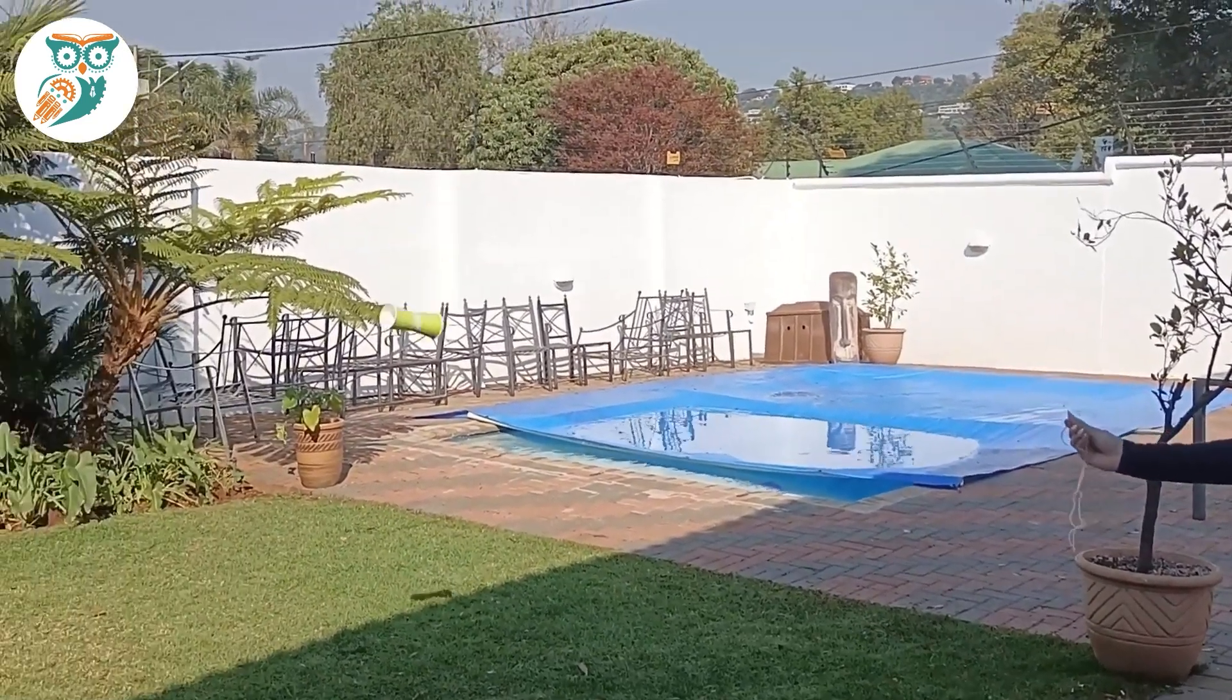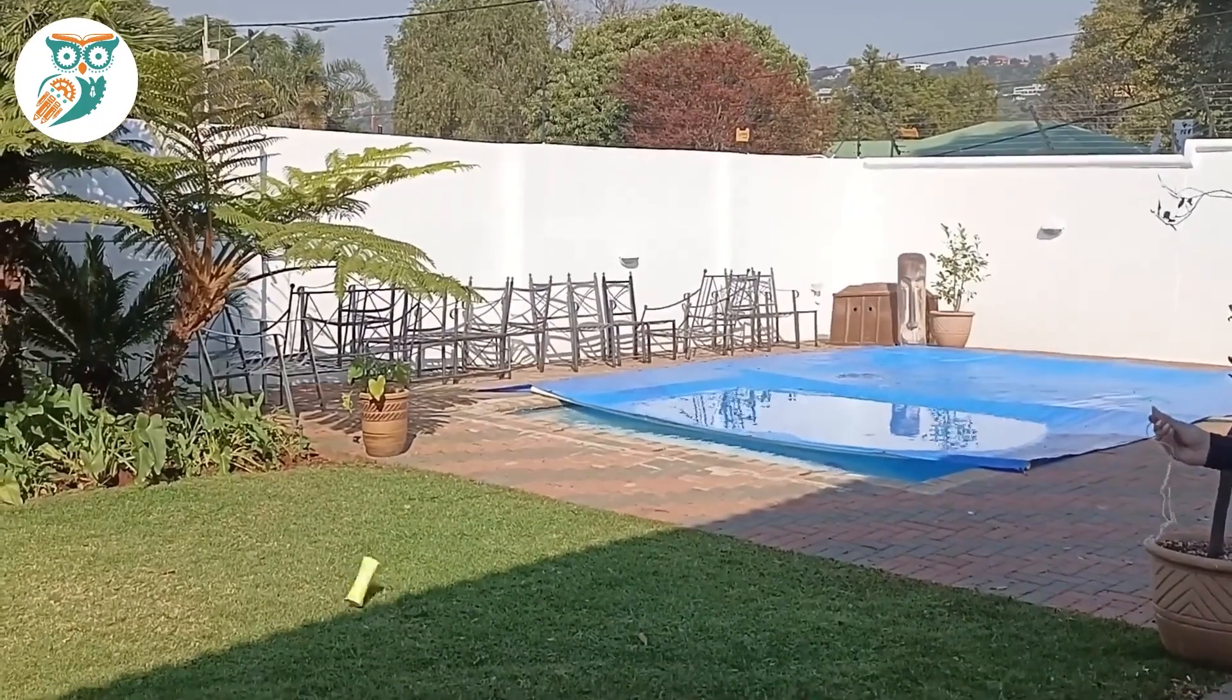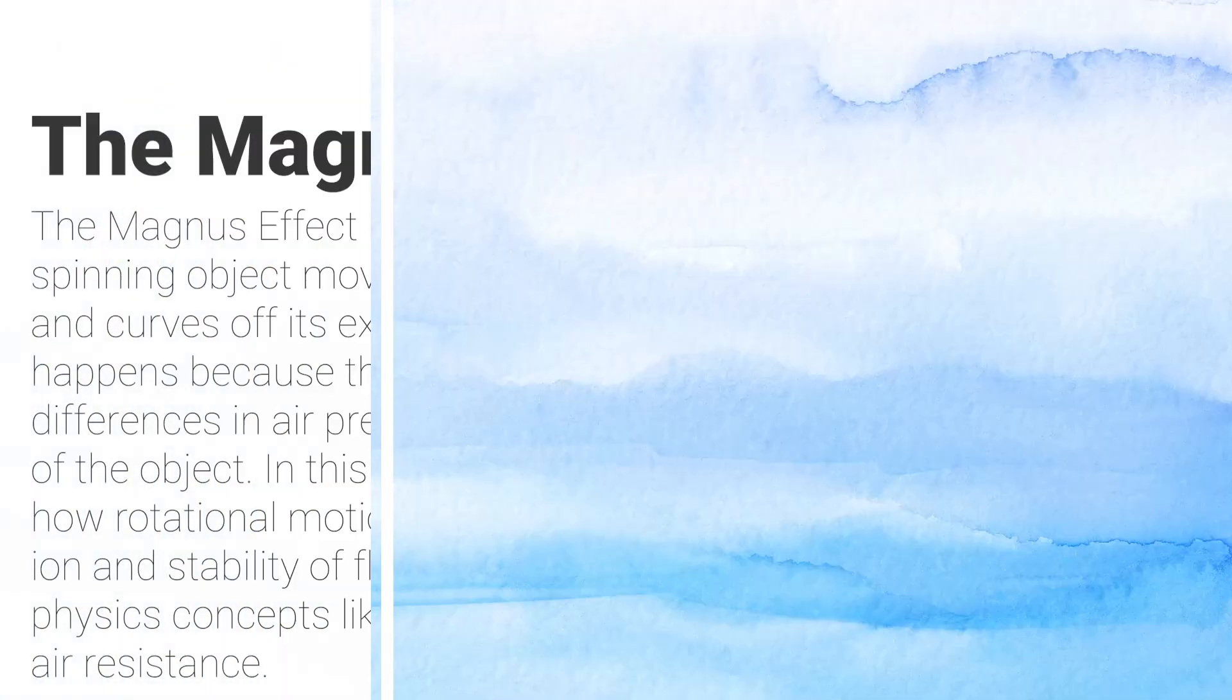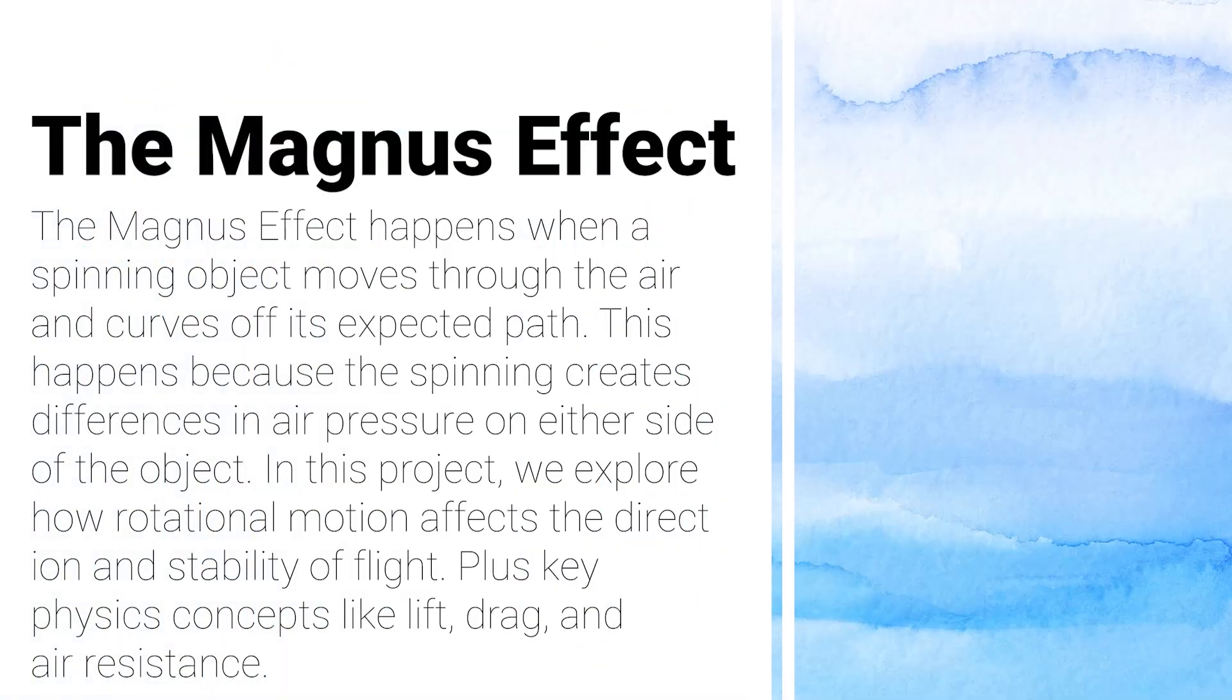See how it changed directions and didn't fly direct? That's the Magnus effect. The Magnus effect is when a spinning object moves through the air and curves off of the path that we expect. It happens because of the difference in air pressure.